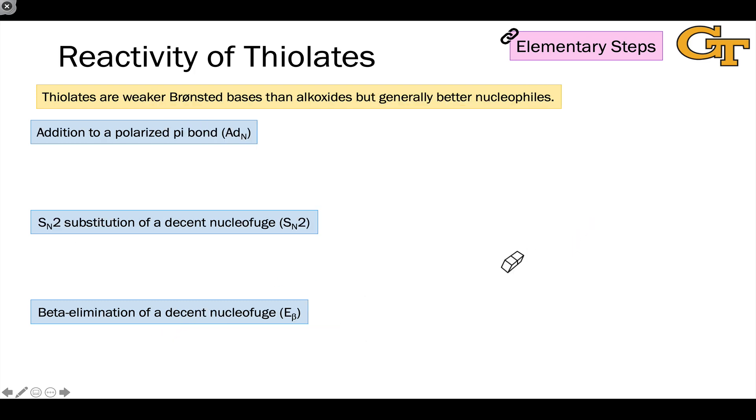Thiolates are the conjugate bases of thiols, and they're generated through the deprotonation of the sulfhydryl hydrogen. And of course, if thiols are good nucleophiles, then thiolates are even better nucleophiles.